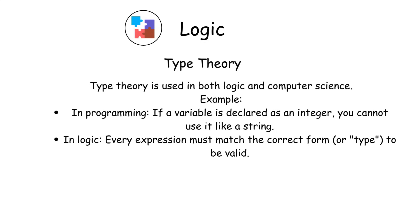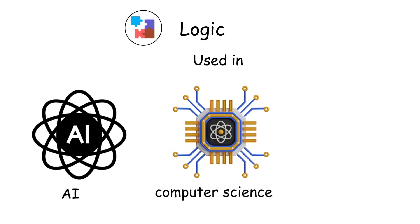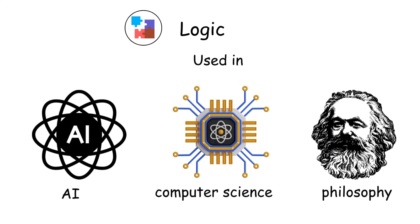Type theory connects logic to programming, verifying software correctness. Logic's rigor shapes computer science, AI, and philosophy.